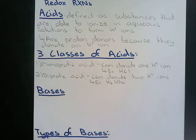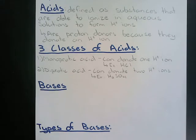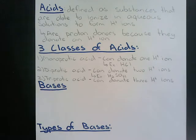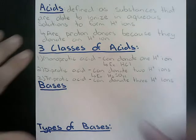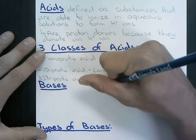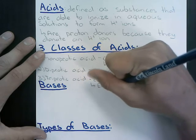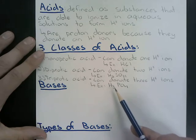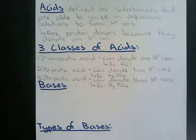Our other class of acid is a triprotic acid — acids that ionize to form three H+ ions. An example would be phosphoric acid, with the formula H3PO4. You can see there are three H's that are able to be donated, so that's where we get the triprotic acid classification — three H+ ions can be donated.